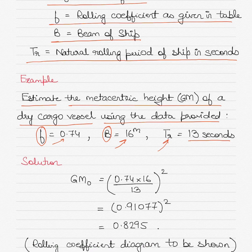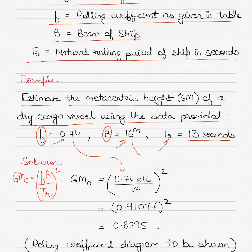The solution is pretty simple: just put in the values in the formula. So GM₀ equals f times B by TR, whole squared. You find out the value inside the bracket first, then square it.